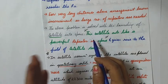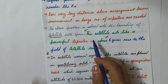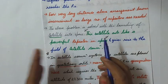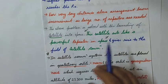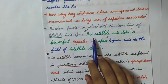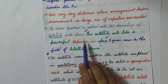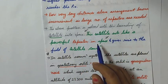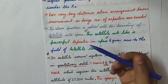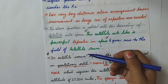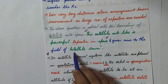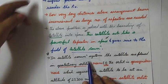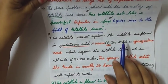With the help of a satellite, the problem of using many repeaters was solved by placing a single, very powerful repeater — the satellite — in the sky. Through this repeater in the sky, long-distance communication became possible. This satellite acts like a powerful repeater in space, giving rise to the field of satellite communication.